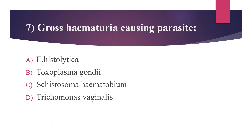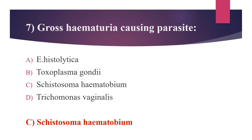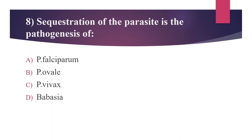Seventh question: Which parasite causes gross hematuria? Option A: Entamoeba histolytica, Option B: Toxoplasma, Option C: Schistosoma haematobium, Option D: Trichomonas vaginalis. The answer is Option C, Schistosoma haematobium — a urinary pathogen which causes urogenital schistosomiasis. Three common parasites found in urine are Trichomonas vaginalis, Schistosoma haematobium, and Microfilaria.